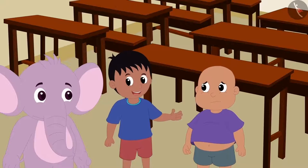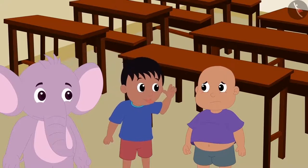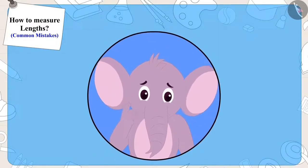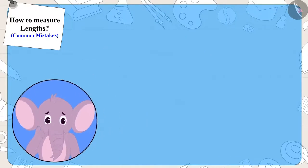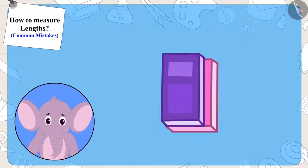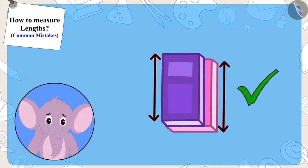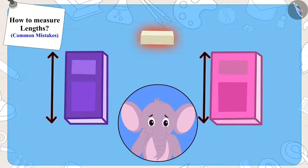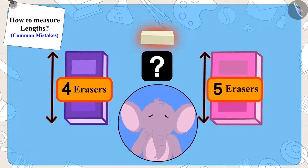Raju started teasing Bablu, saying that his notebook was longer. Appu was doubtful. He immediately kept one notebook above the other and found that both notebooks were of the exact same length. But Appu was shocked to know that if they had used the same eraser to measure both the notebooks, how had the measurements turned out to be different? Children, can you tell me why and how did this happen?